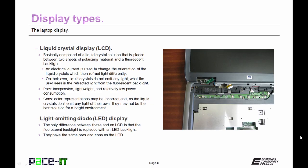So now let's talk about the liquid crystal display, the LCD. Basically, it's composed of a liquid crystal solution that is placed between two sheets of polarizing material and a fluorescent backlight. An electrical current is used to change the orientation of the liquid crystals which will then refract light differently, giving you different colors. On their own, liquid crystals do not emit any light. What the user actually sees is the refracted light from the fluorescent backlight. Now LCDs are inexpensive, they're lightweight and they use relatively low amounts of power. They're a pretty good option for laptops.